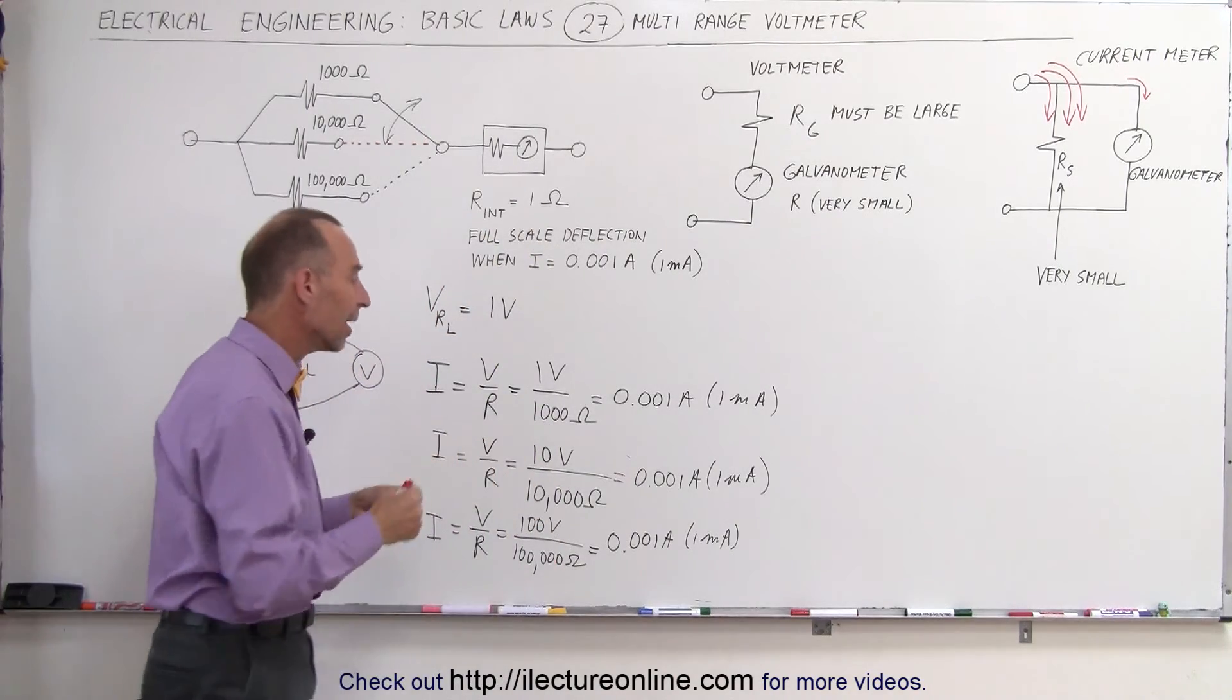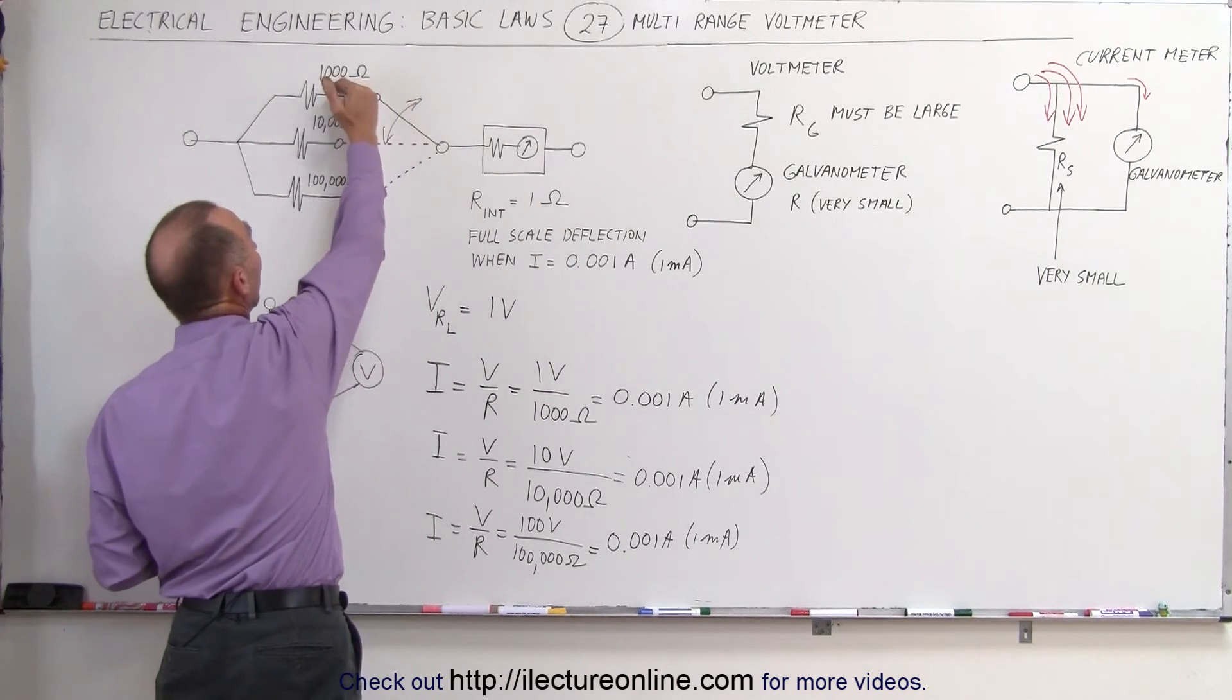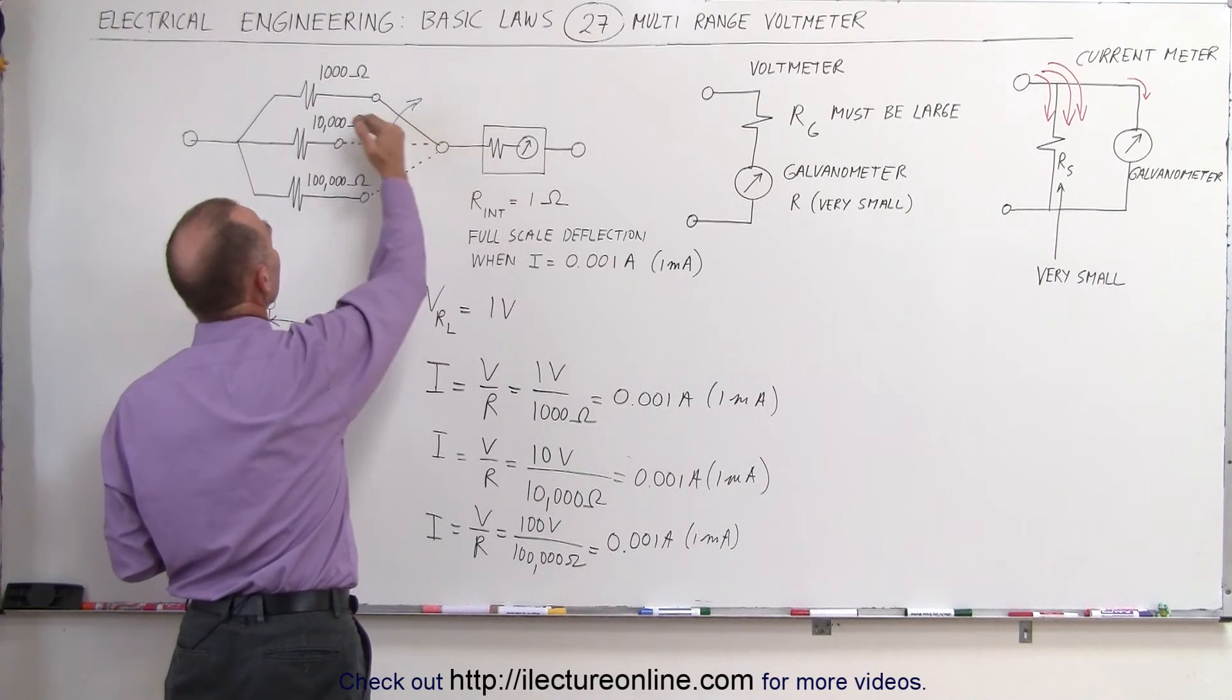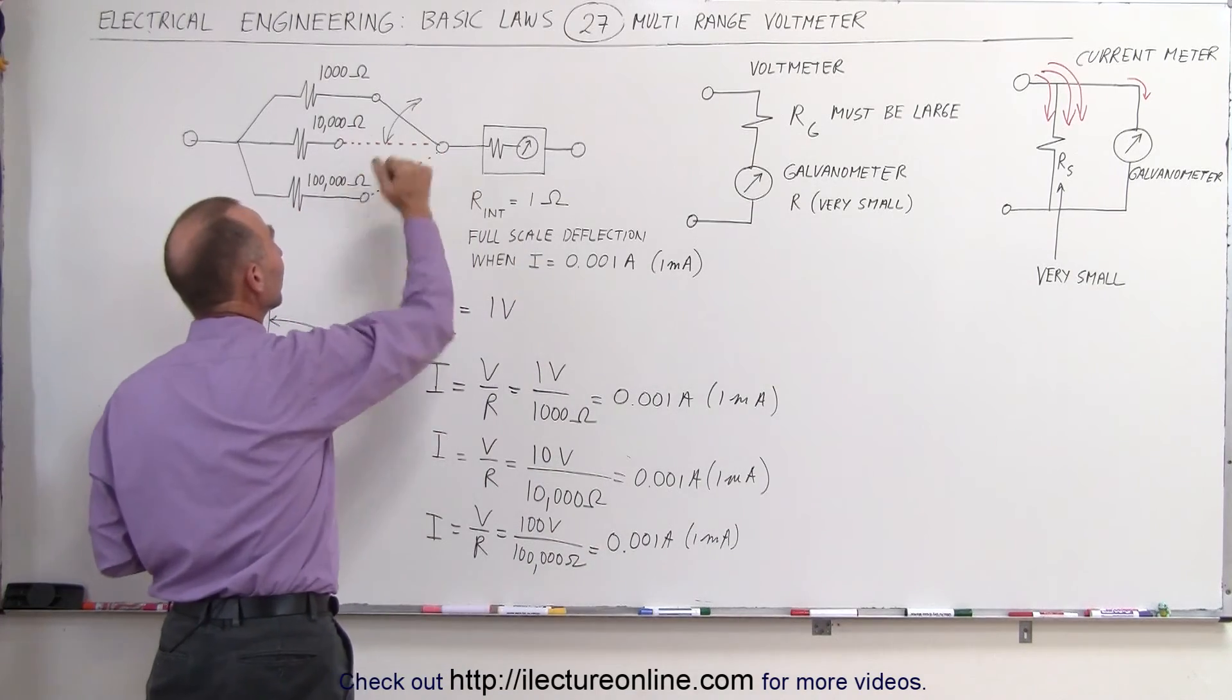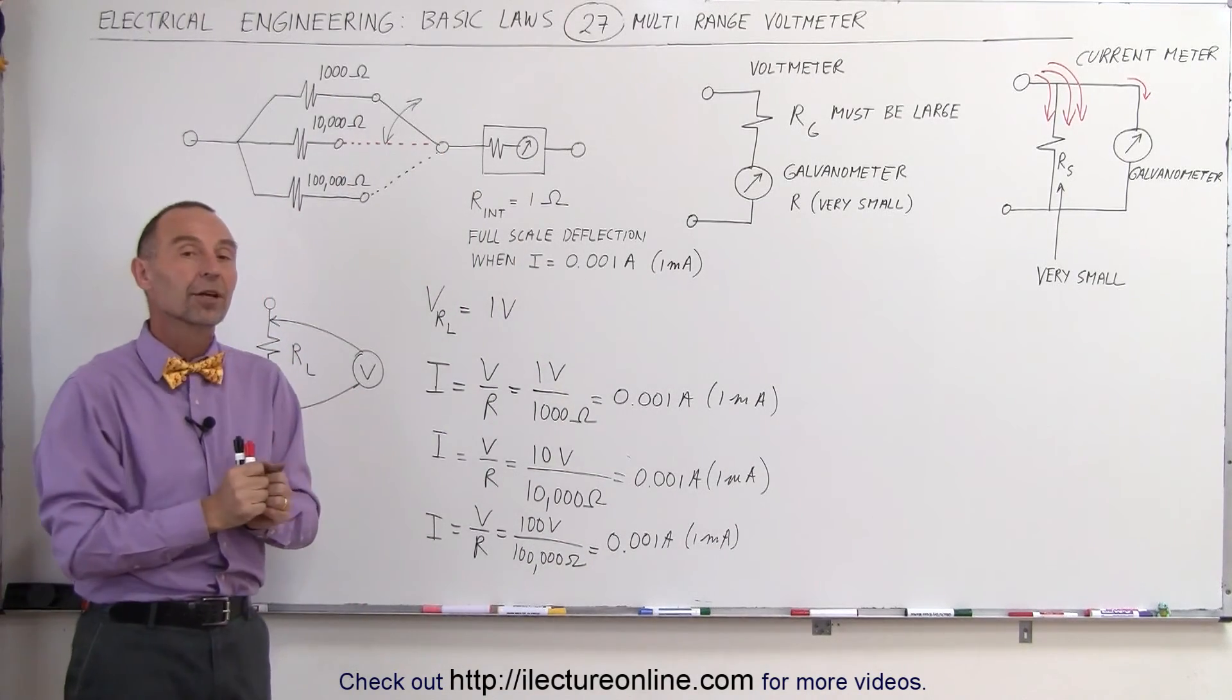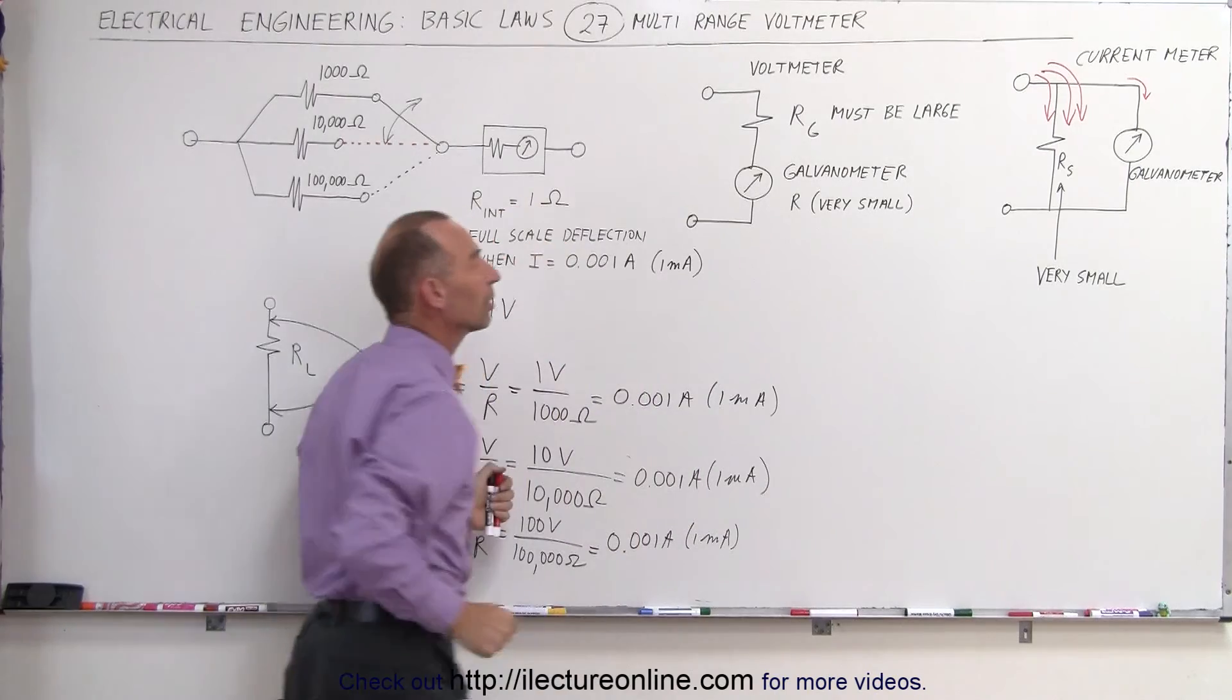In other words, with the same galvanometer, we can handle maximum current of 1 milliamp, we can measure up to 1 volt if we dial it into a 1,000 ohm resistor in series. We can measure up to 10 volts if we dial in a 10,000 ohm resistor in series. We can measure up to 100 volts if we dial in a 100,000 ohm resistor in series. So in each case you can see that the very same galvanometer can be used in the same voltmeter as long as we can change the settings of the resistor that is in series with the galvanometer.